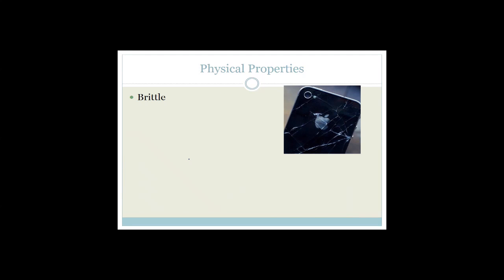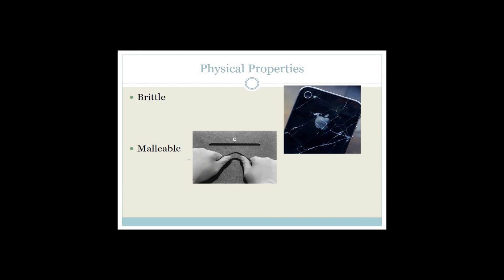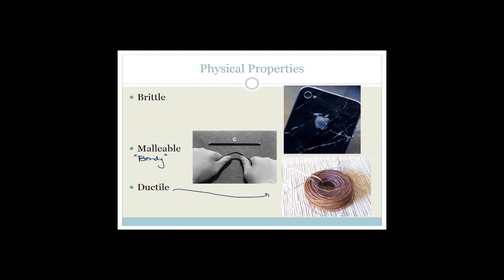Is it brittle? Can it crack? If you drop a phone, there's a very strong chance your screen will crack — that shows that glass is brittle. Or is it malleable? Malleable means how easily we can bend the material — though never use the word 'bendy' in a test or exam. Or ductile — can we pull it into a thin wire? Ductile describes how easily we can pull it into a wire. You need to be able to recognize all these physical properties.